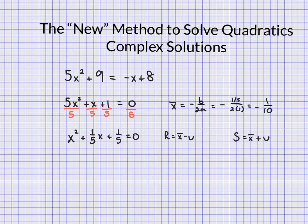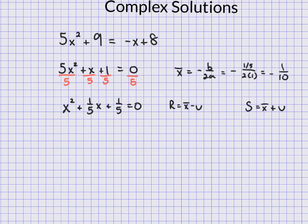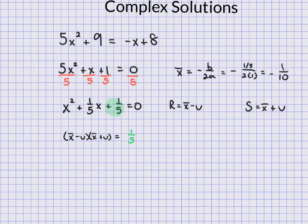Okay, so now those two multiply. So x-bar minus u times x-bar plus u are going to multiply to be the value of c, which in this case is the one-fifth. So that goes right there.